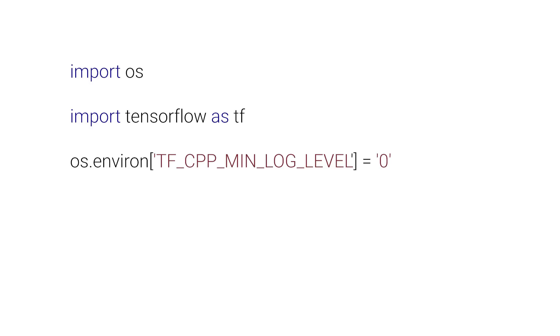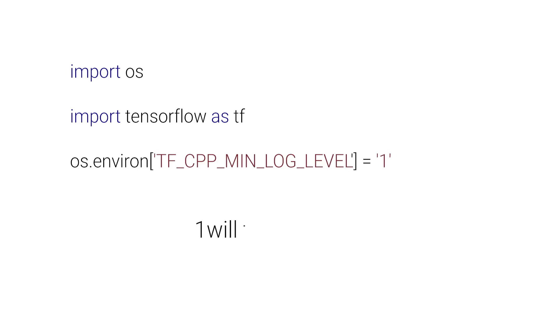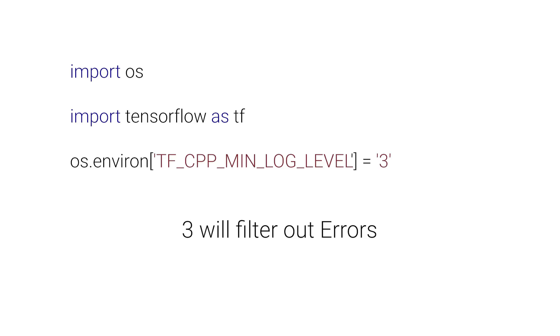You essentially set os.environ and set this environment variable to a specific log level. The default log level is zero, which means show everything. If you put one there, it will filter out info messages. Two will filter out warning messages. And three will filter out all error messages. So if you set it to three, you'll see very little output, and your own debug messages that you've inserted into your code won't be lost in all the noise. Great question — should we move on to the next?